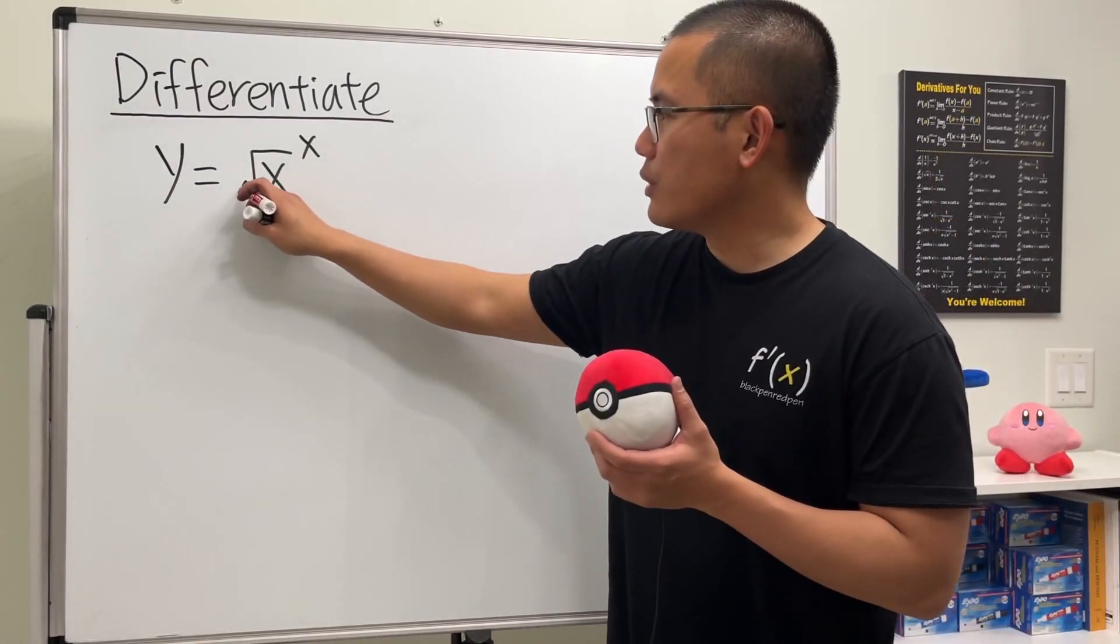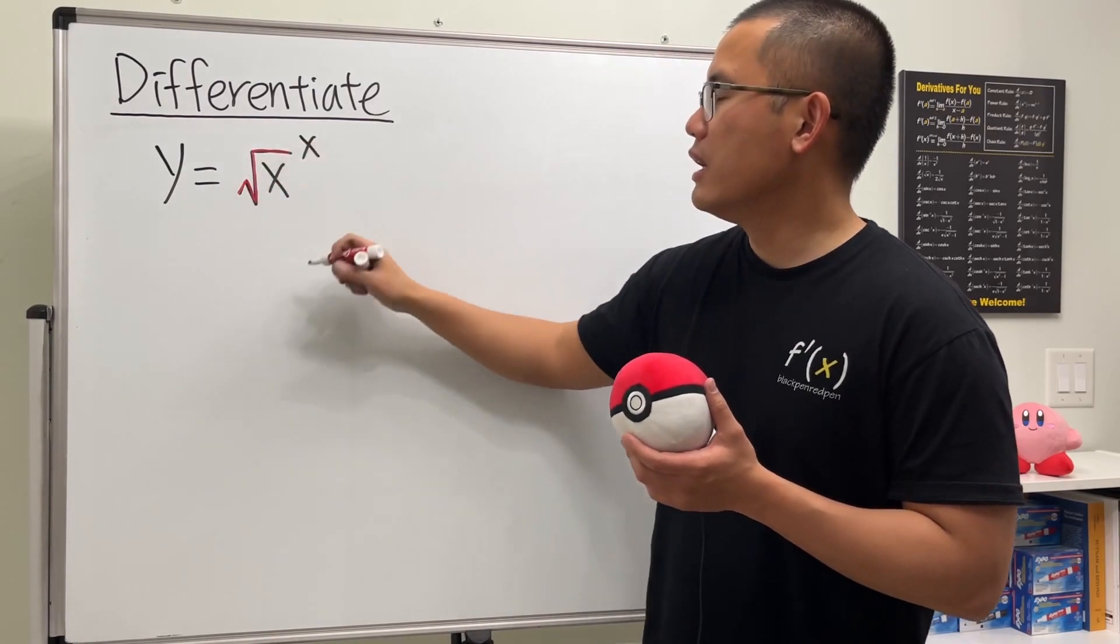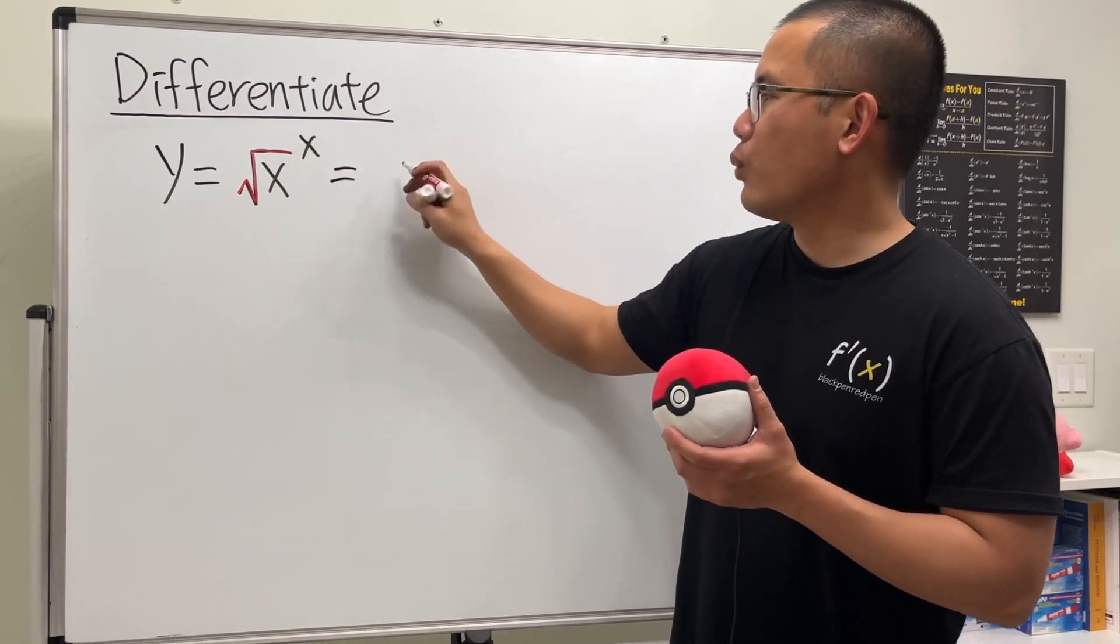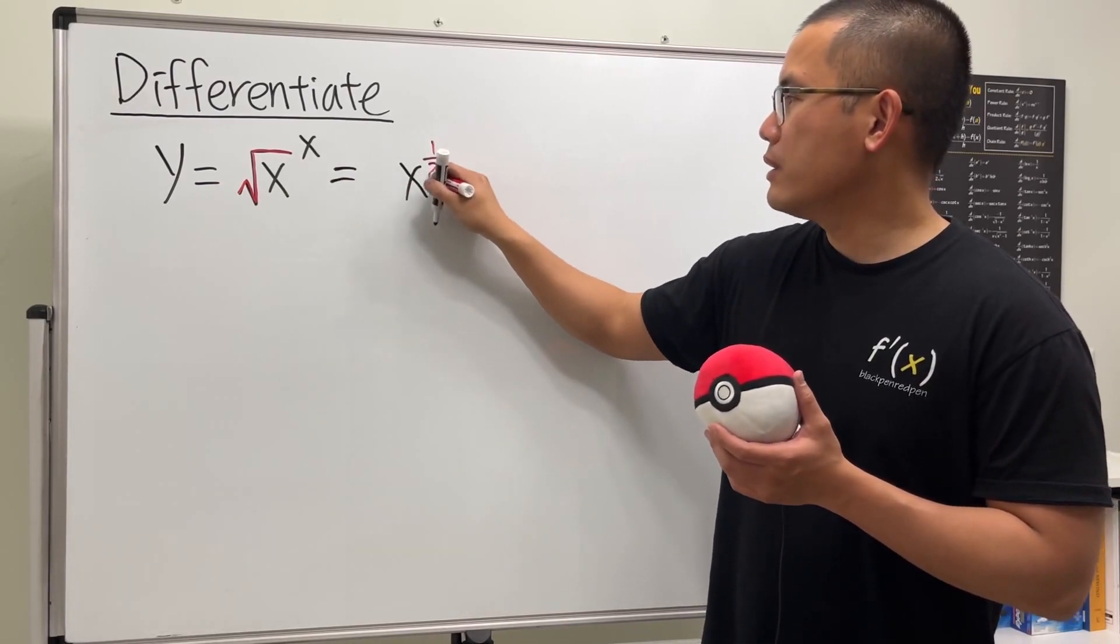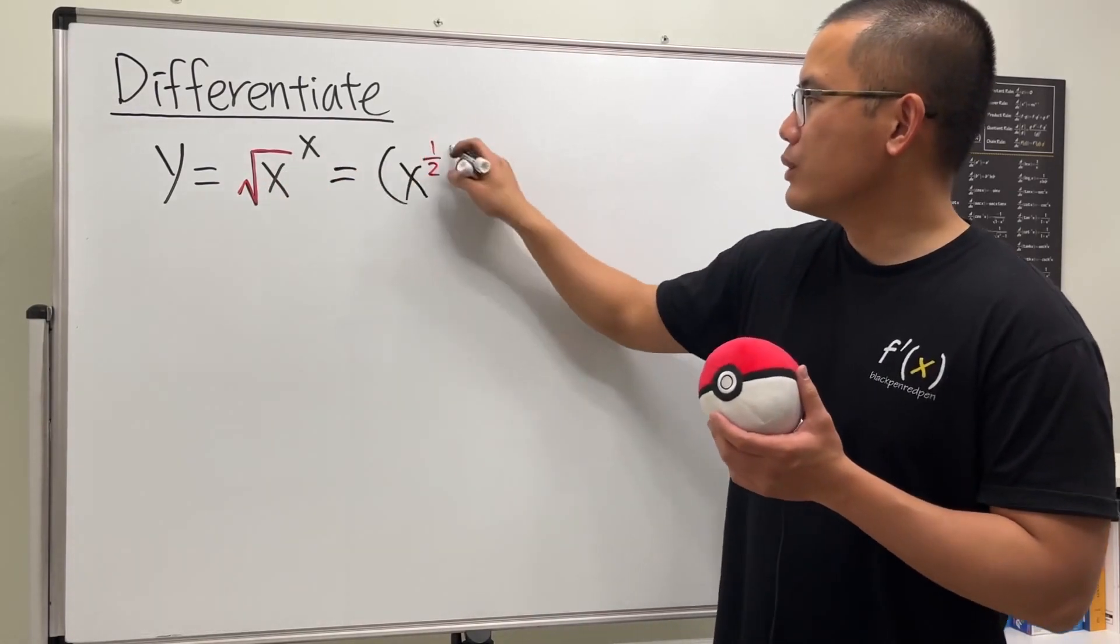We see that this right here is the same as saying we have the one half power. So this is x to the one half power and then raised to the x power.